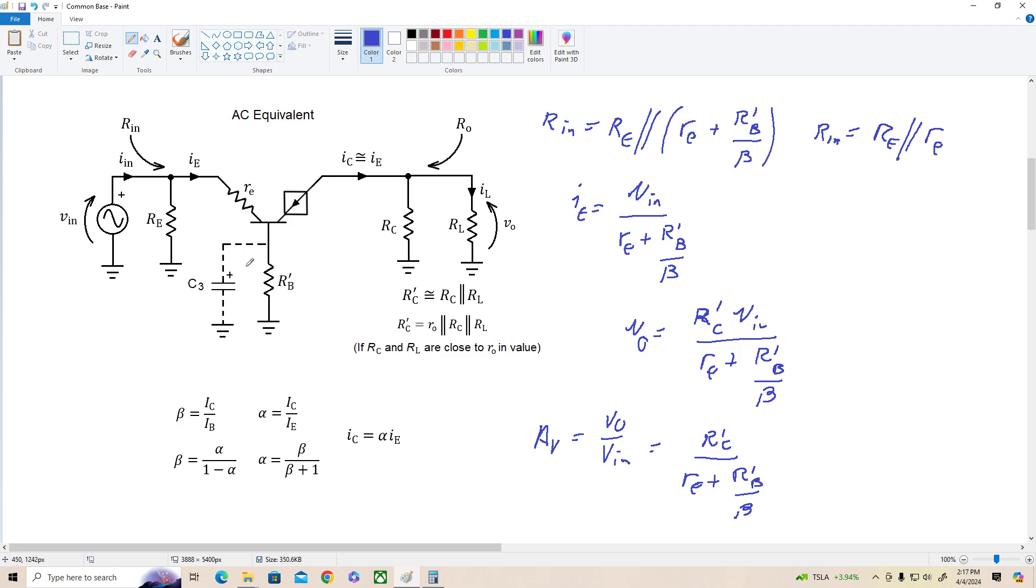Now that's with no bypass cap. If we bypass the base resistance, this term goes to zero, and we get voltage gain equals R prime C over little re. That's the same equation we had for the common emitter amplifier. So this amplifier is capable of high voltage gain just like the common emitter.